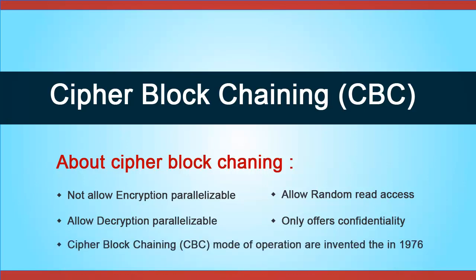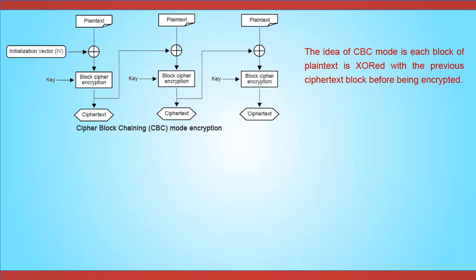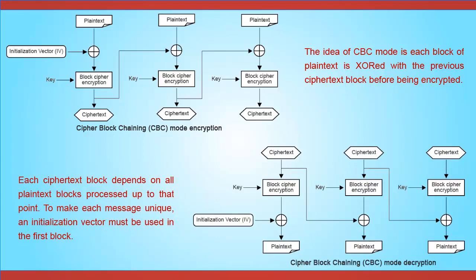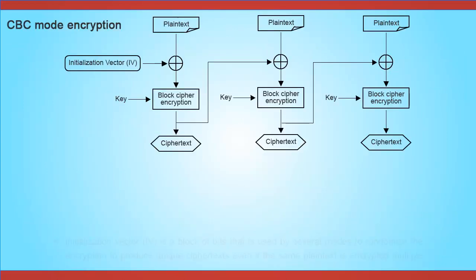Cipher block chaining mode of operation was invented in 1976. The idea of CBC mode is that each block of plaintext is XORed with the previous ciphertext block before being encrypted. Each ciphertext block depends on all plaintext blocks processed up to that point. To make each message unique, an initialization vector must be used in the first block.